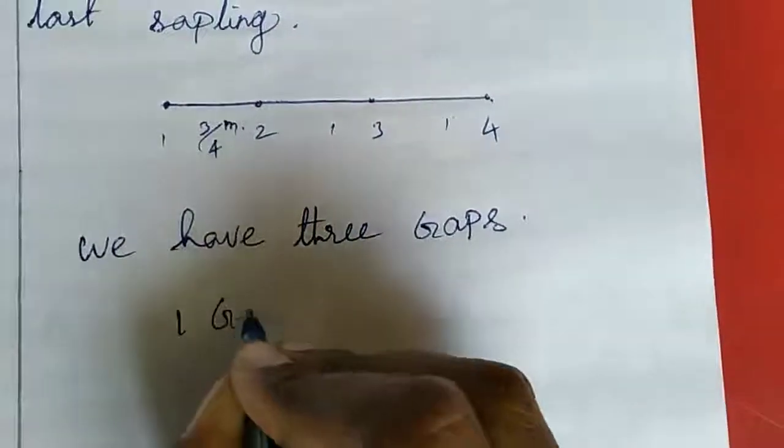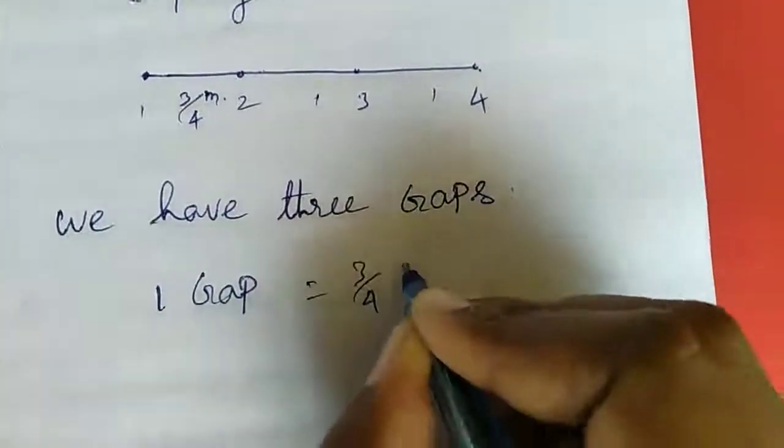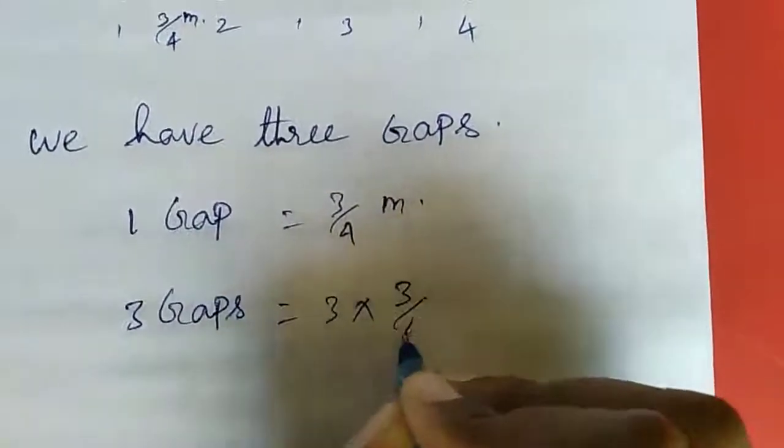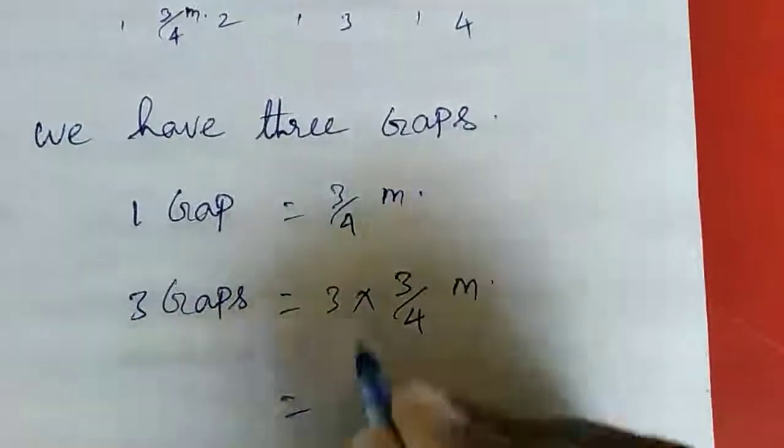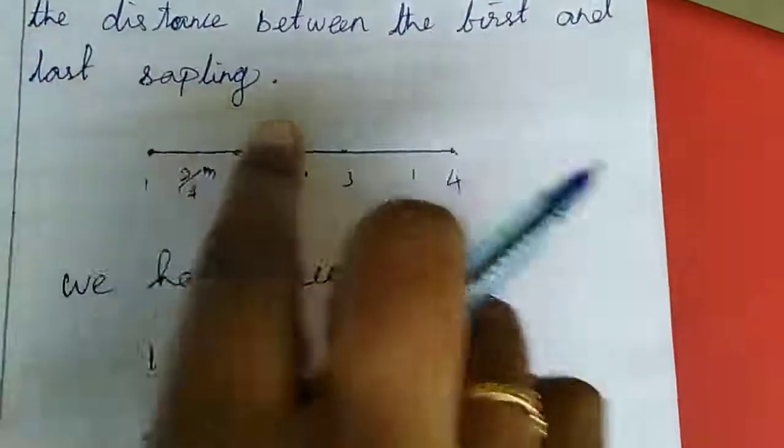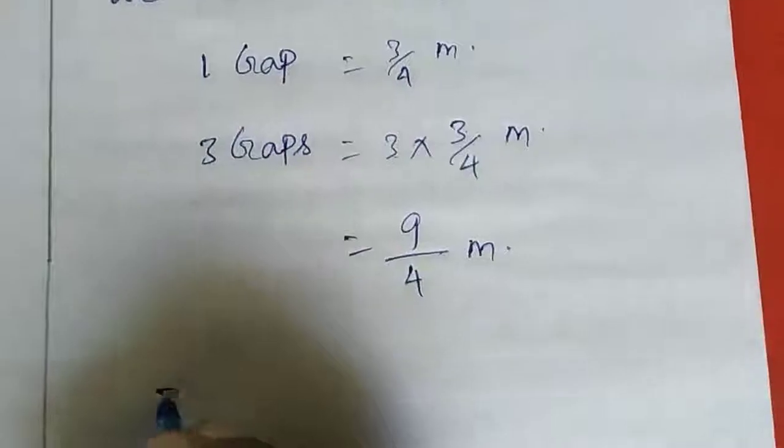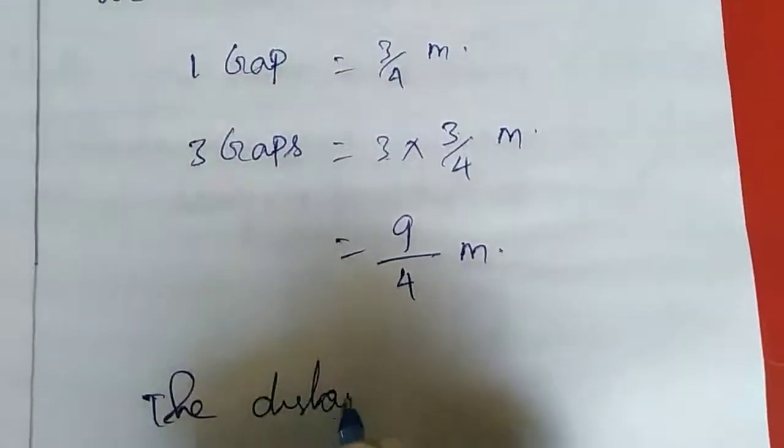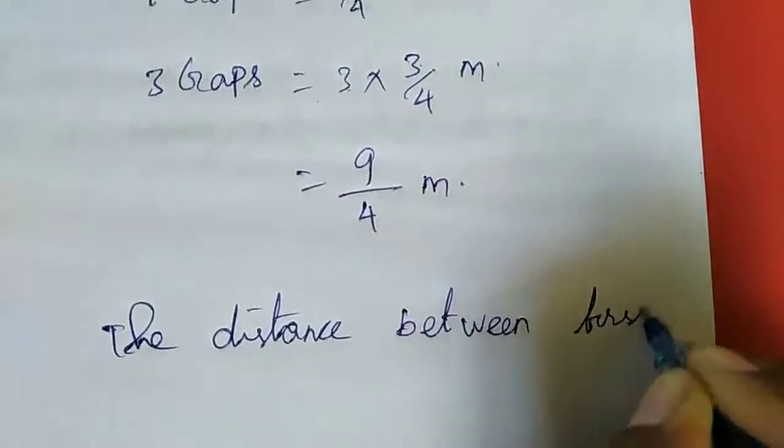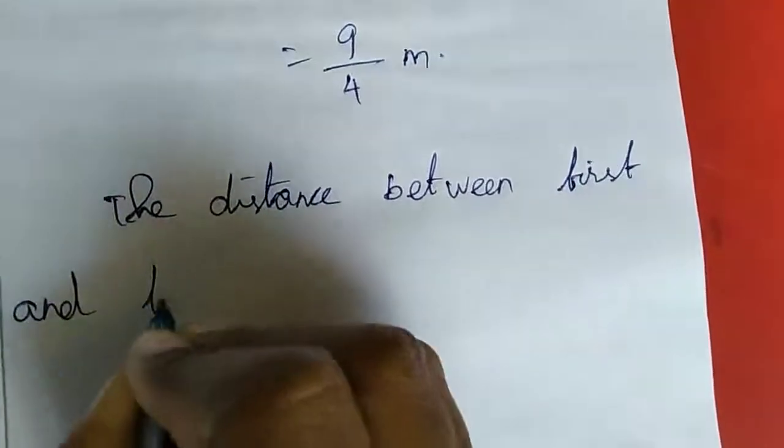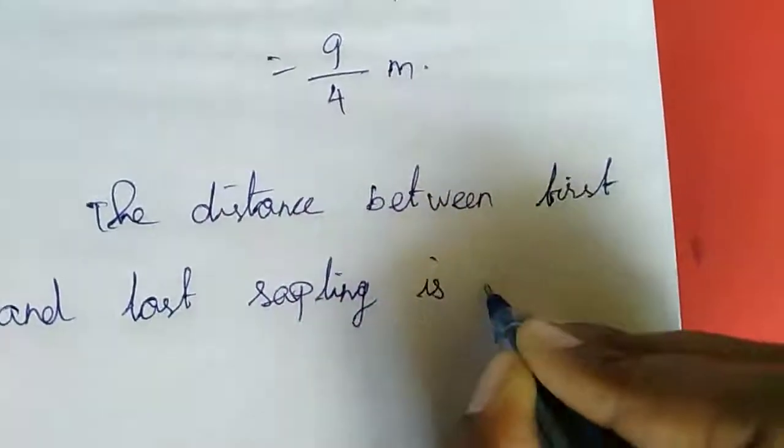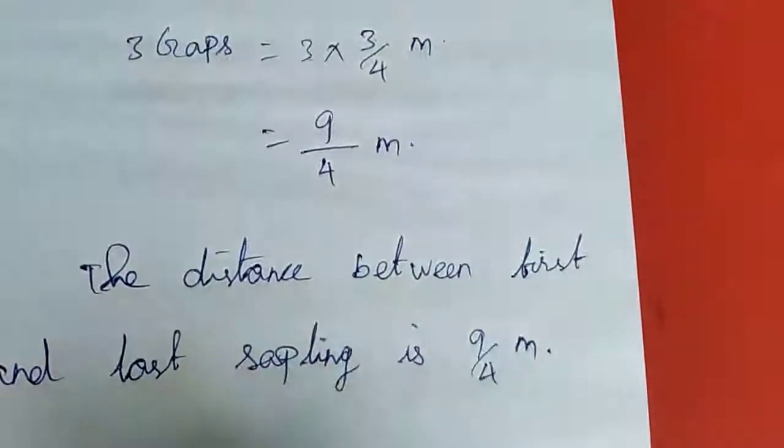1 gap equal to 3 by 4 meter. 3 gaps equal to 3 into 3 by 4 meter. If you multiply 3, it is 9 by 4 meter. So the distance between first and last saplings is 9 by 4 meter. That is all. Now we will move to the 6th sum.